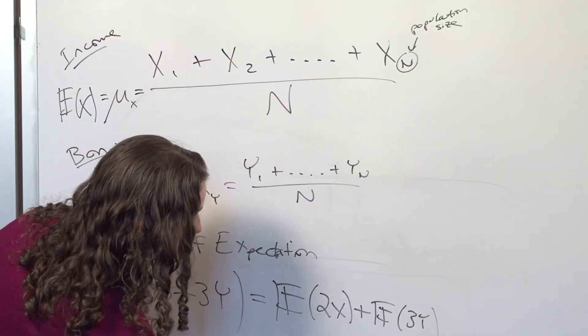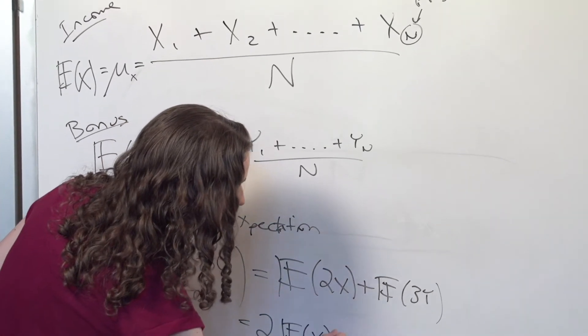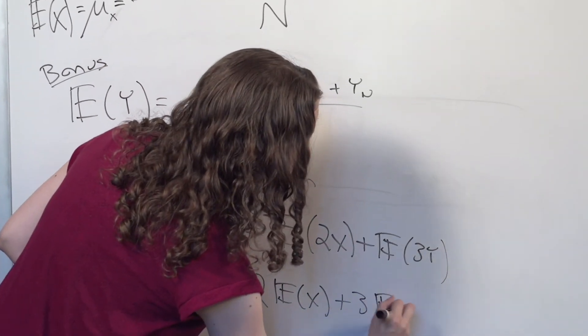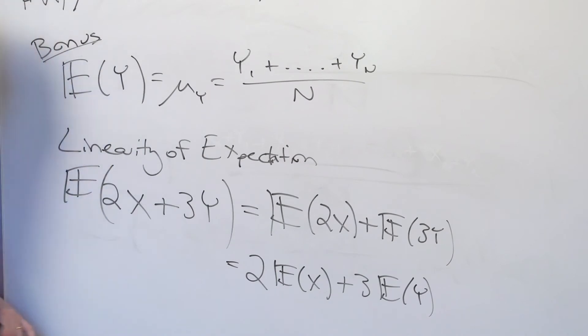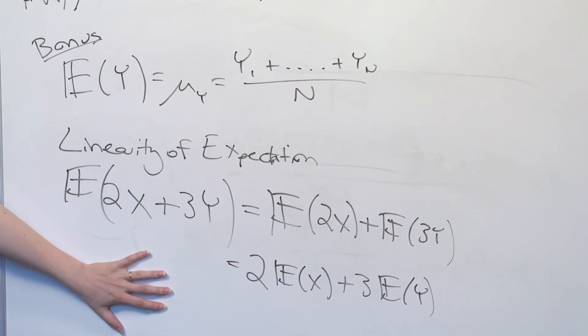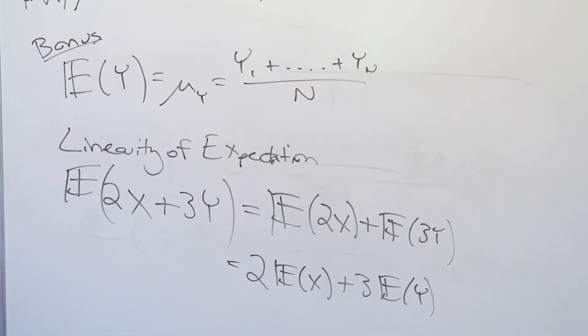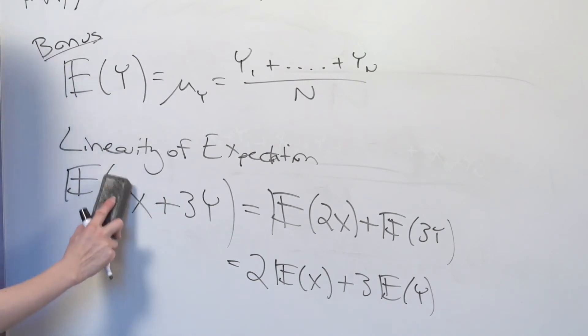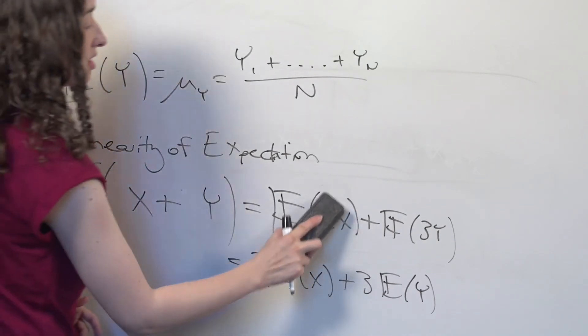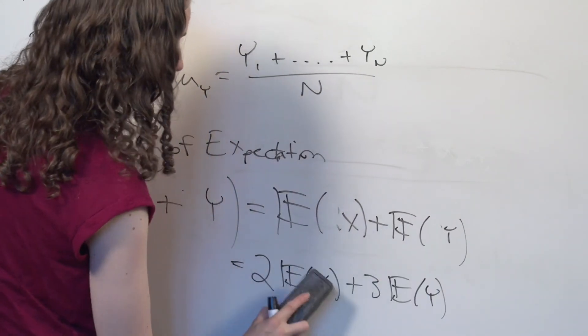And furthermore, that this is equal to two times the expected value of X plus three times the expected value of Y. And if I substitute in A's and B's here, which I'll do right now, then we have the general case for the linearity property.